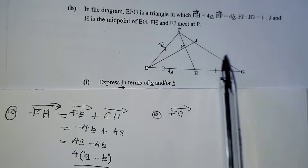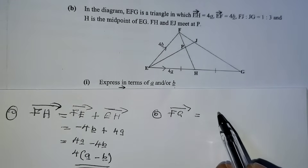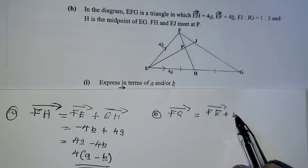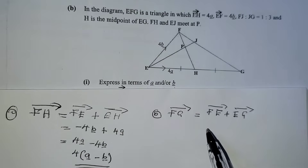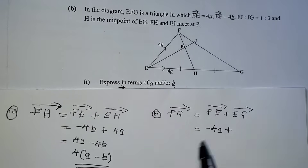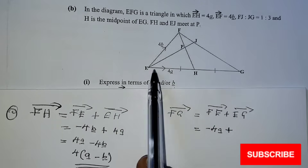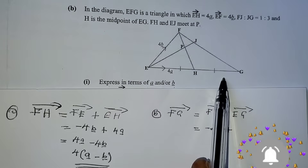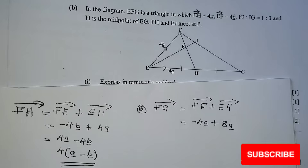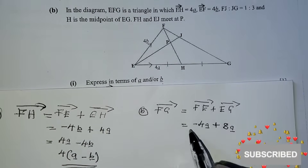F is here, G is here. So we move via FE plus EG. Vector FE plus EG. FE is still the opposite — negative 4 vector a — plus EG. H is the midpoint, so the distance from E to H equals H to G. So we have twice 4a, meaning from E to G is 8 vector a. So vector FG is 8 vector a minus 4 vector a.